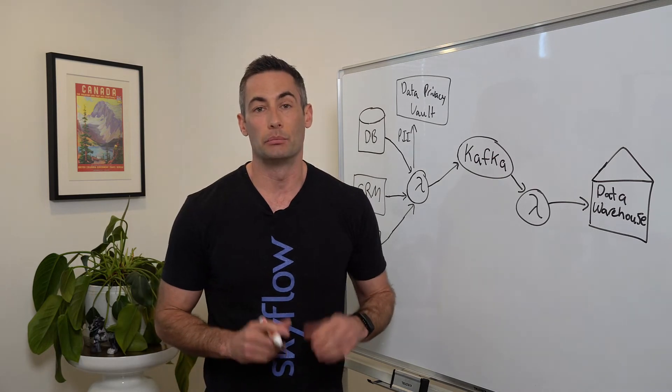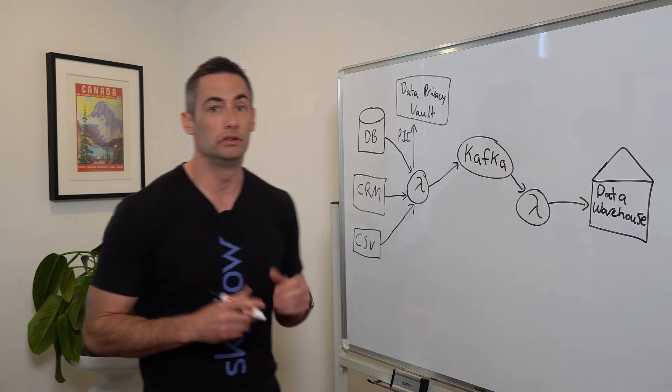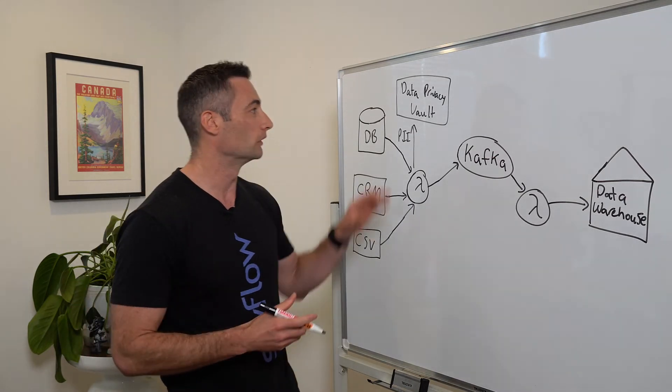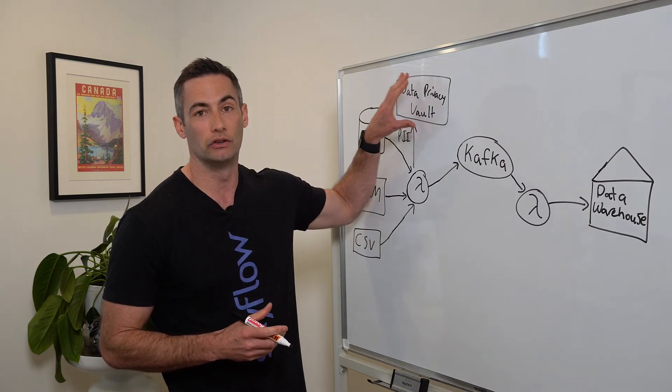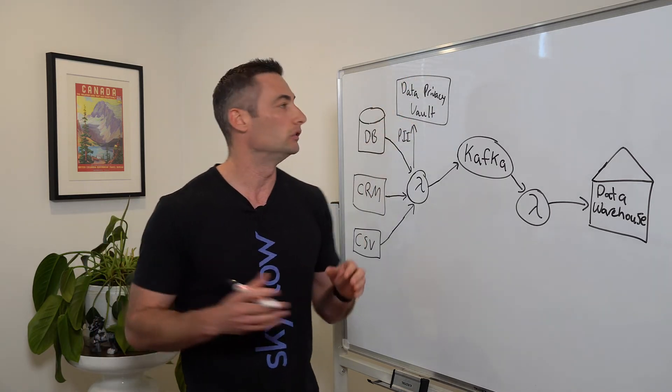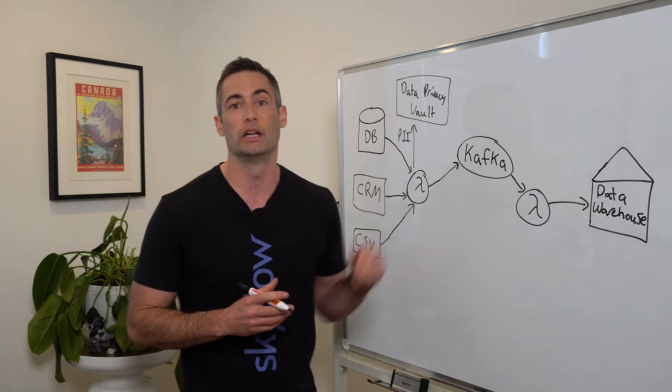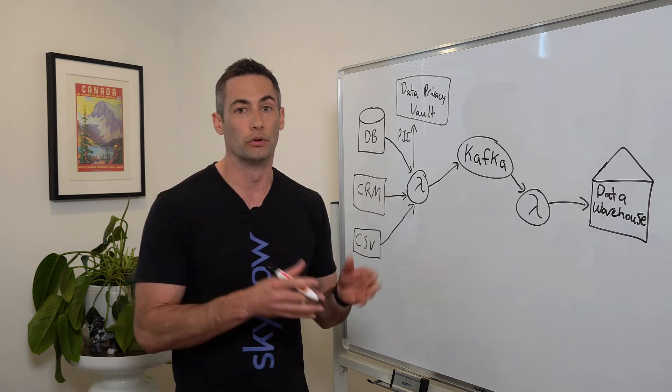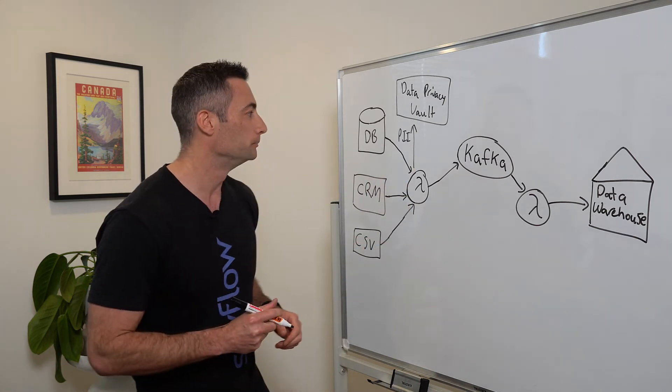So immediately that makes it much easier to deal with something like data residency because we know all the customer data is stored within the privacy vault. And we can split that out into different regions if we need to. We can create a data privacy vault for Europe, for Brazil, for United States, and so on.